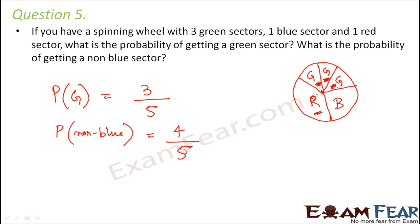To solve any problem on probability, remember this simple logic: probability of any event equals the total possible outcomes for that event divided by the total possible outcomes in the entire experiment. When you throw a dice, the total possible outcomes is always six. When you play with cards, the total possible outcomes is always 52.